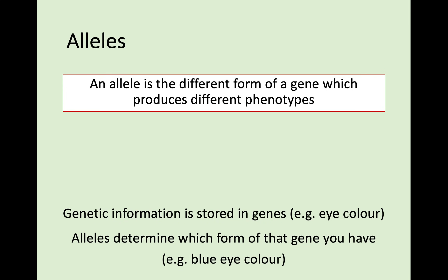An allele is a different form of a gene which produces different phenotypes. Your genetic information is stored in your genes — that's where your DNA is. So you could have an eye colour gene, but the alleles determine what form of that gene you have. For example, you could have a blue eye colour allele and another blue eye allele coming from your parents, which will give you blue eyes. We're going to look at how alleles work to produce a phenotype and it'll make more sense then.